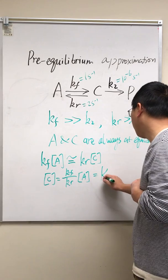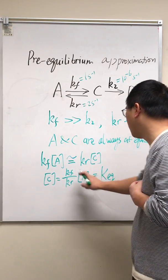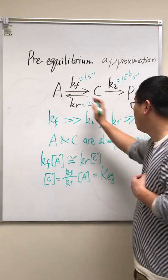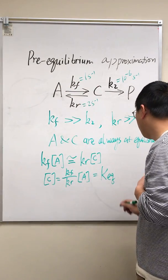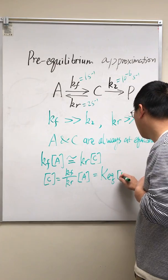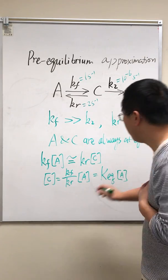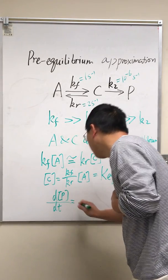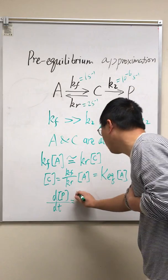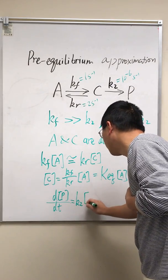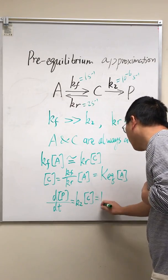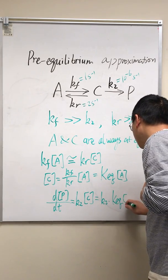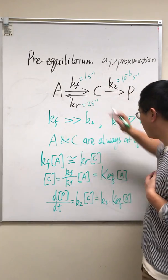And if we define this KEQ to be KF over KR for the A to C reaction, we have this expression here. And then how fast can P be produced? It's very simple, it's just K2 times C, equals K2 times KEQ times A.